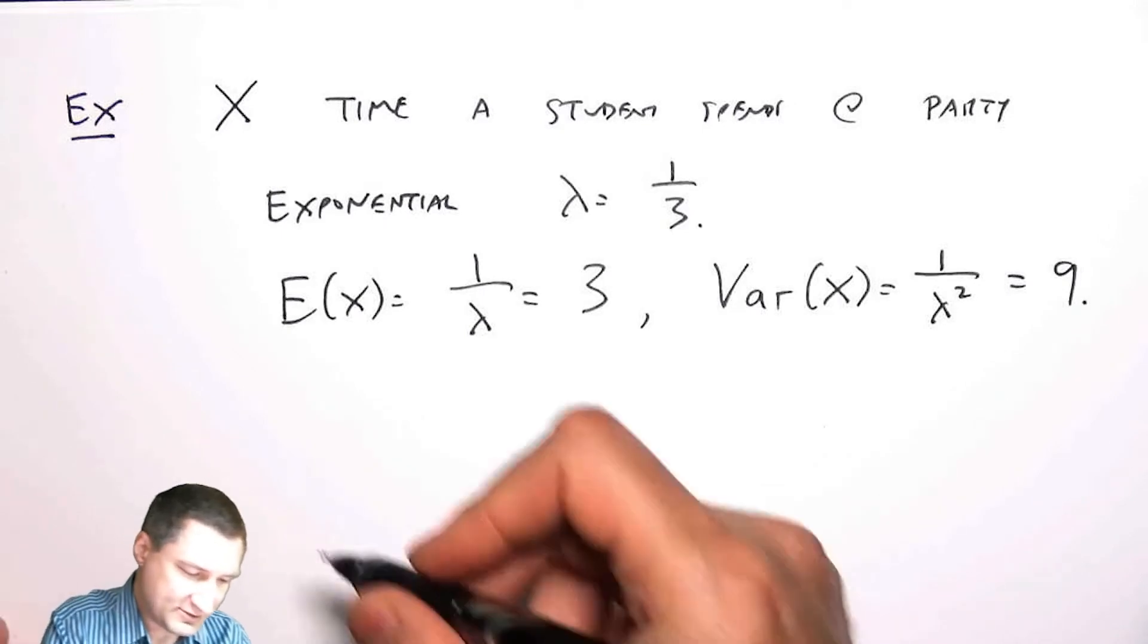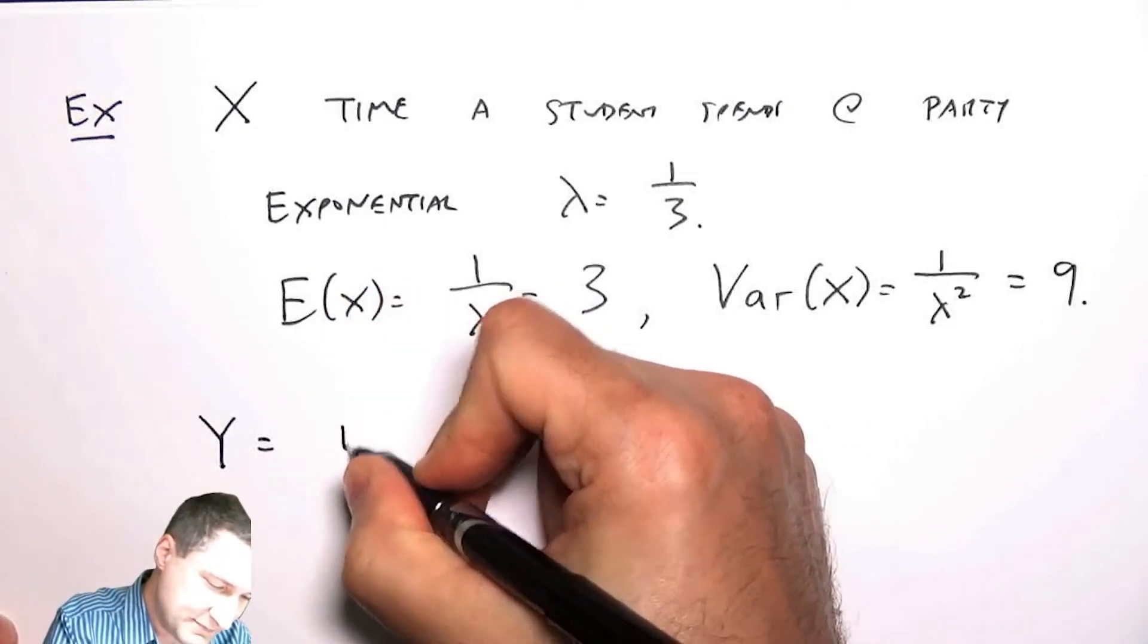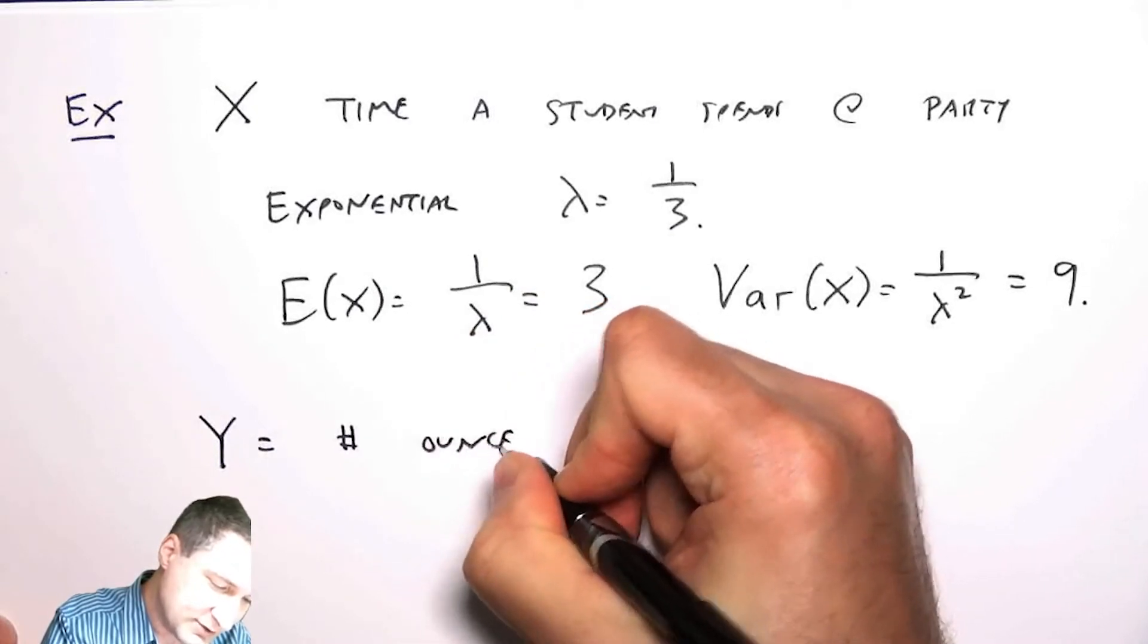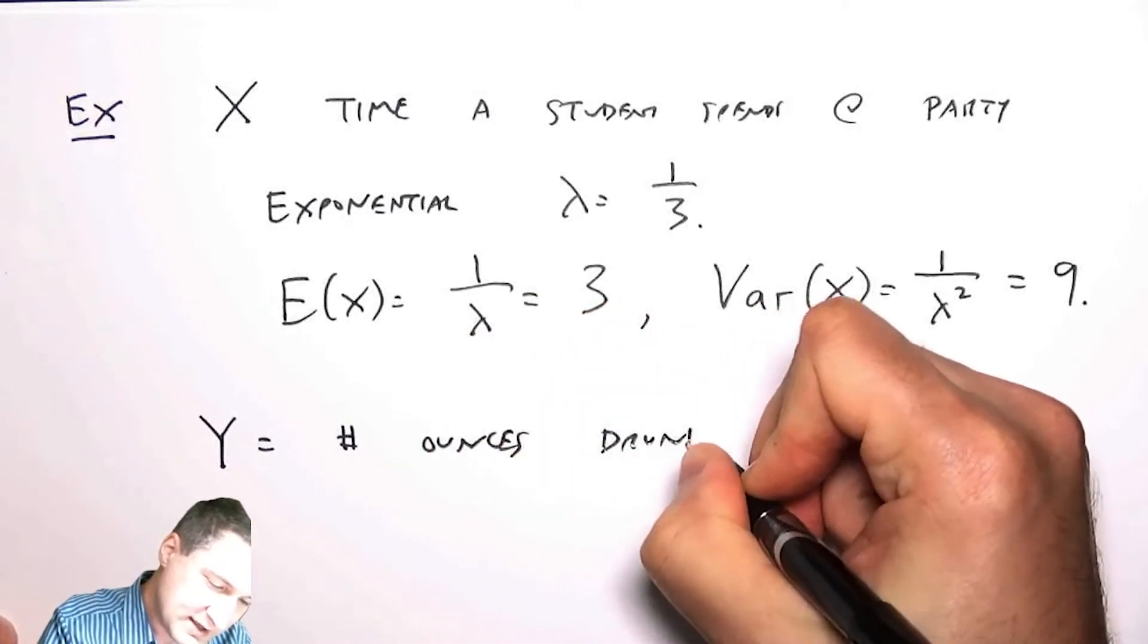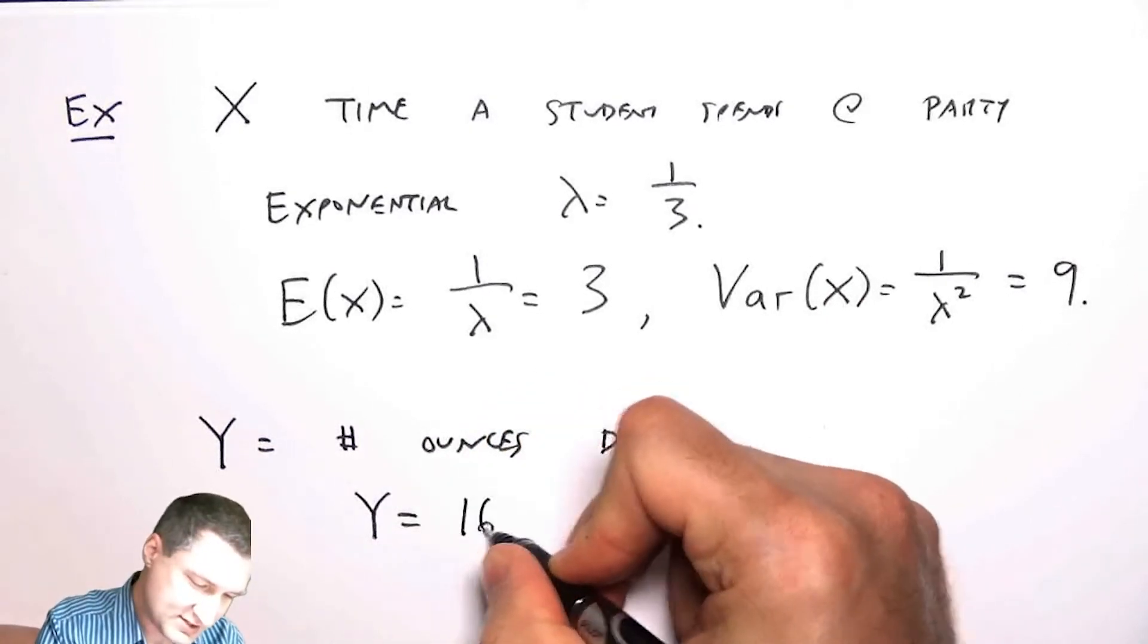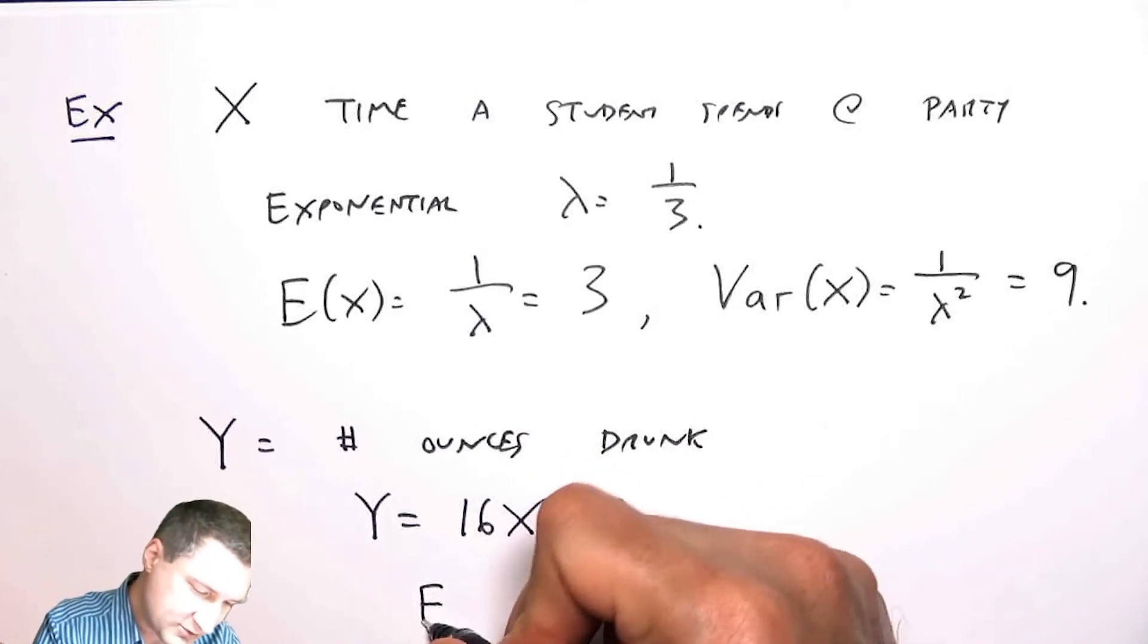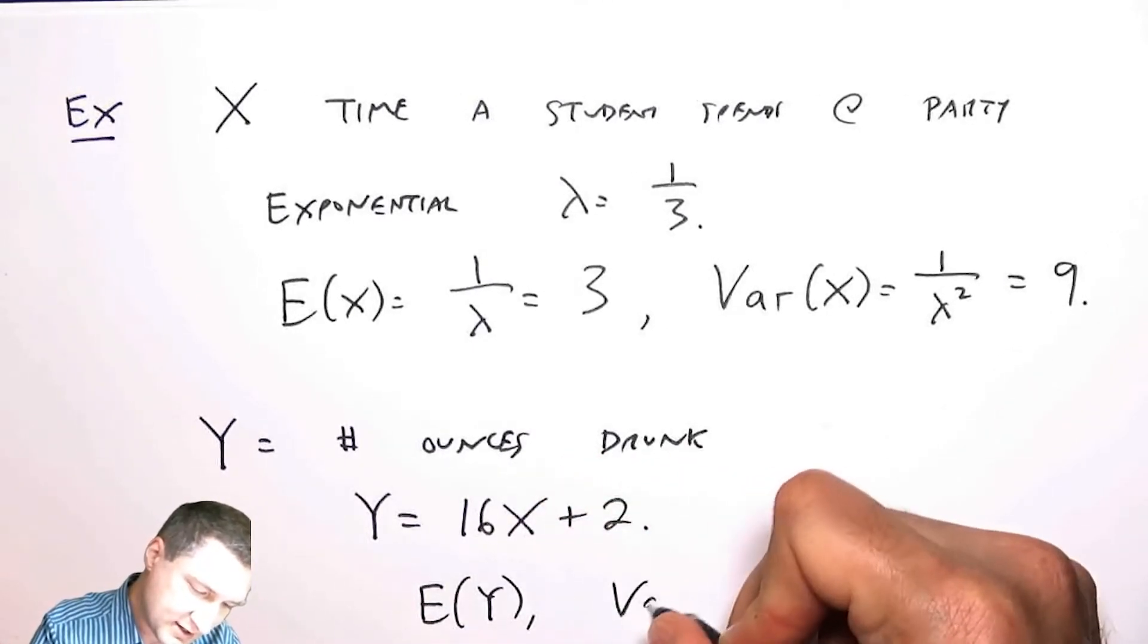Let's suppose that Y equals the number of ounces of liquid drunk by a student and it's related to the time they spend at the party by Y equals 16X plus 2. Now I want to compute the expected value of Y and the variance of Y.